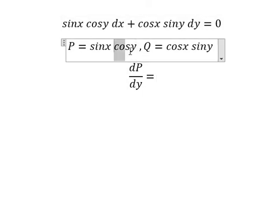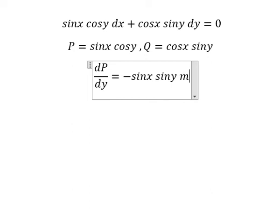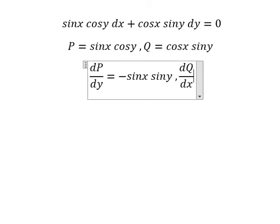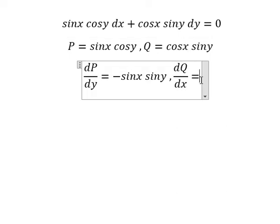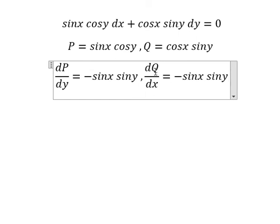So we just have only cos(y). The first derivative of cos(y) gives us negative sin(y). Next we need to do the first derivative of cube with respect to x, so we just have only cos(y). The first derivative of cos(y) gives us negative sin(x) sin(y).